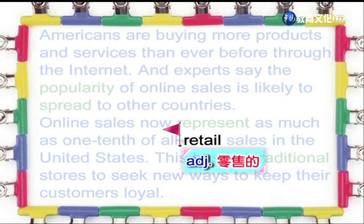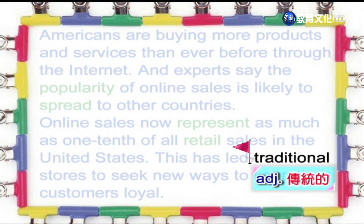好，下一个单字是零售的。Retail, it's an adjective. The word retail describes the sale of goods to the public — selling something to a person who will use or consume the product and not sell it again. 好，下一个单字是传统的。Traditional,